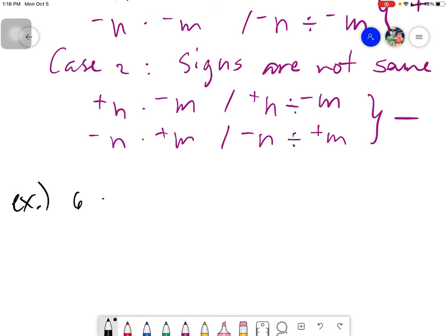Say we have 6 times 7. The answer, they are both positive kasi wala naman na alagay ng symbol. So the answer is positive 42. But if you will be given negative 6 times negative 7, since parehas pa rin ng sign, the answer is still positive 42.